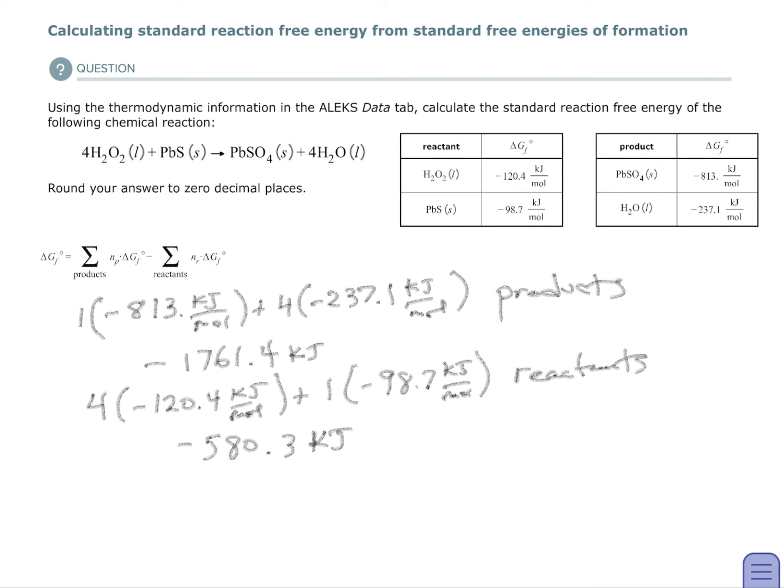Now all I'm going to do is subtract the reactants from the products. So my standard, that's what the little zero is, is the standard free energy of formation, when I put it together, is negative 1181 kilojoules.